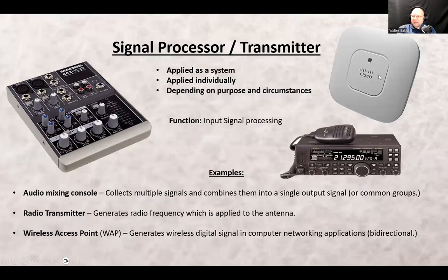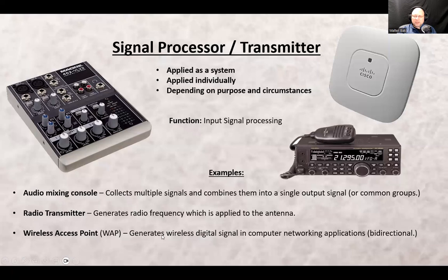The third example here is a WAP — W-A-P, wireless access point — the Wi-Fi thing. They're all over the place, including our school — I think ours are made by Cisco. It generates wireless digital signals into computer networking applications, and it's bi-directional: it can receive signals from your cell phone and also send signals to your cell phone, laptop, tablet, or whatever wireless device you use.